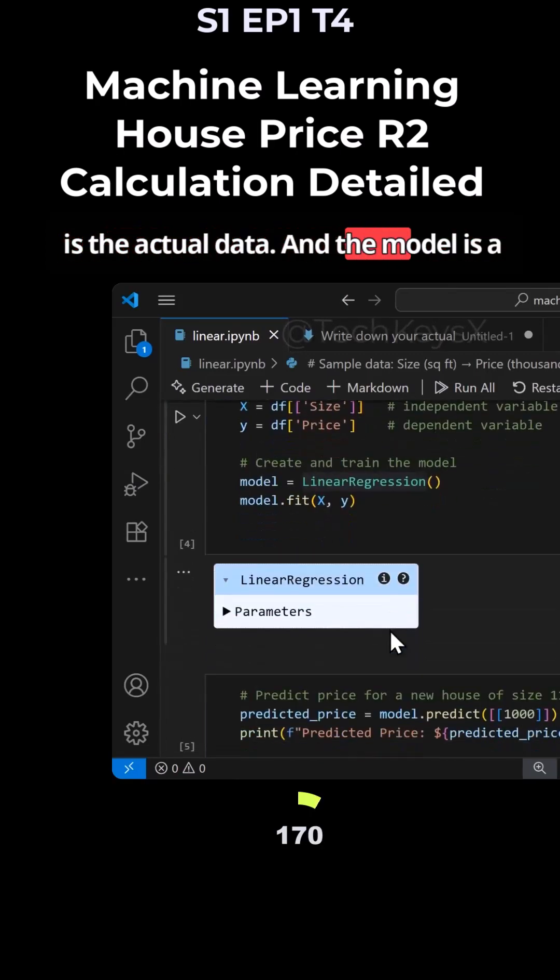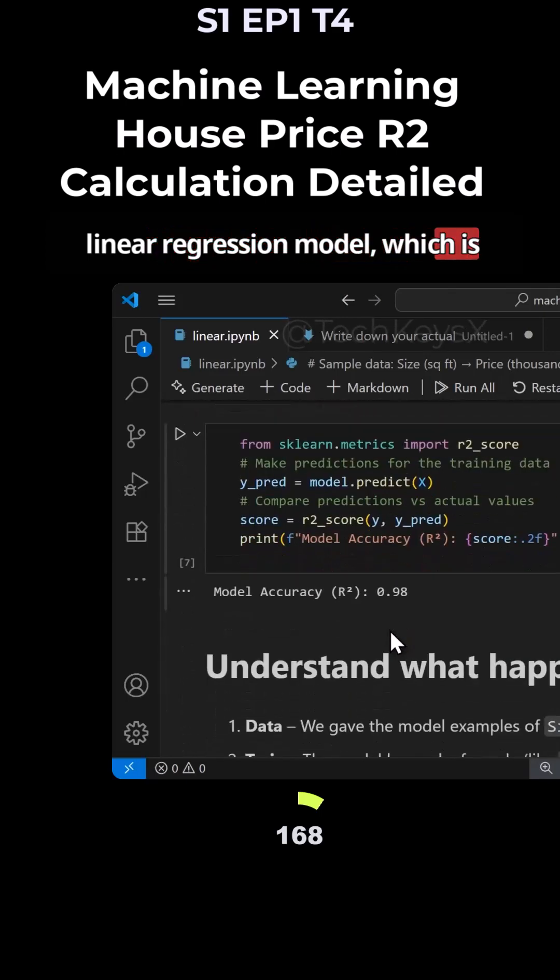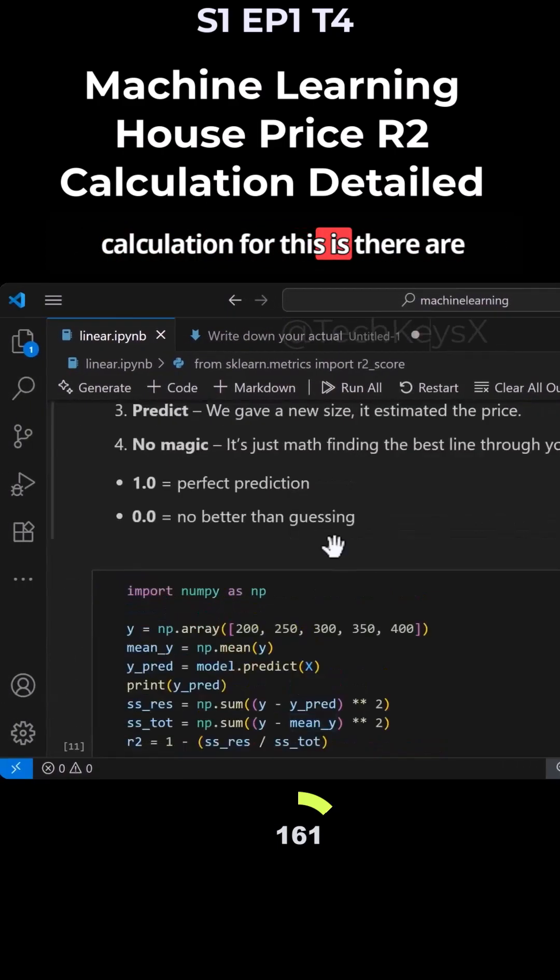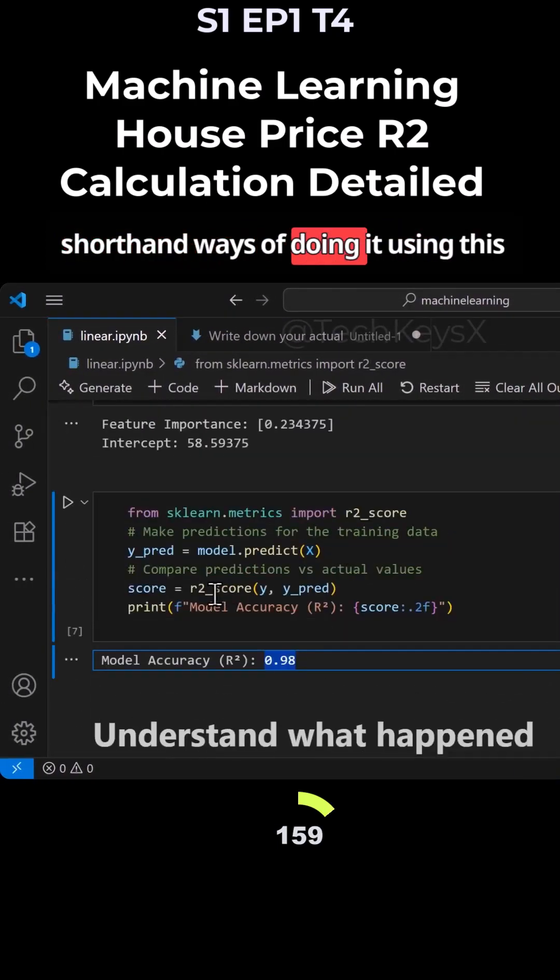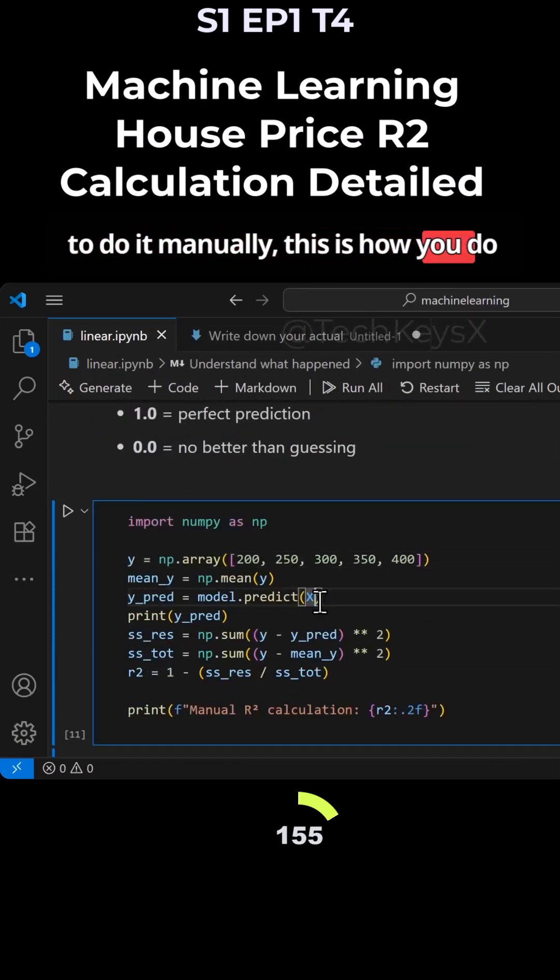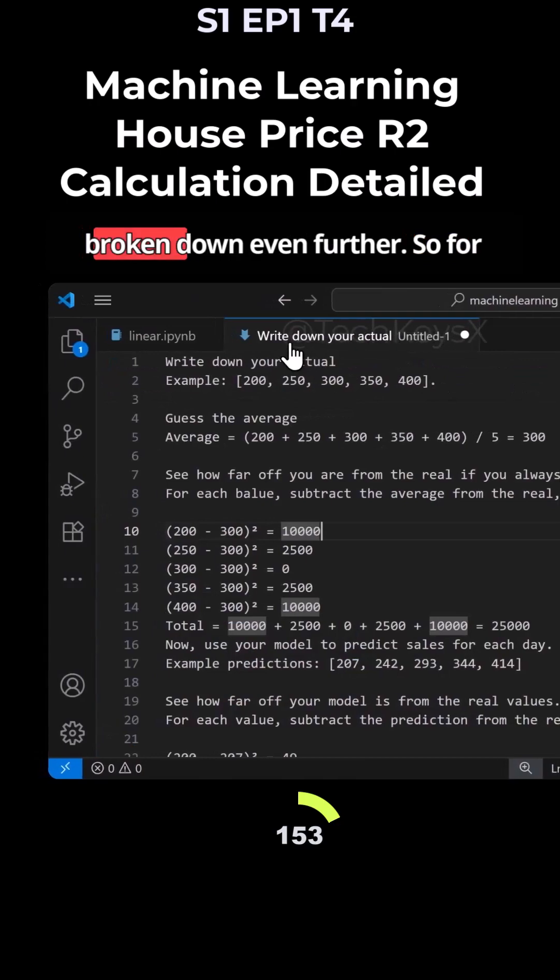So this is the actual data and the model is a linear regression model which is basically predicting the house prices based on the past data. So it's saying the model accuracy is 12.98. The calculation for this, there are shorthand ways of doing it using this library in Python, but if you wanted to do it manually, this is how you do it. The individual steps I've broken down even further.